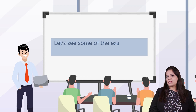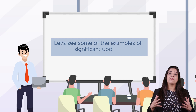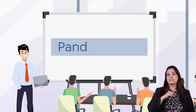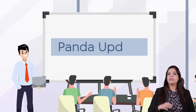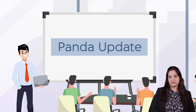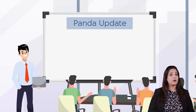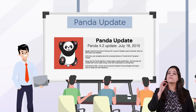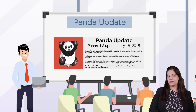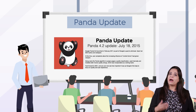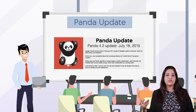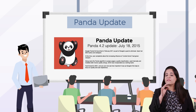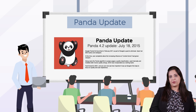Let's see some of the examples of significant updates. First, let us talk about the Panda update. On February 23, 2011, Panda was first introduced. The Panda name was based on the engineer who first identified this algorithm.